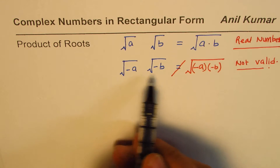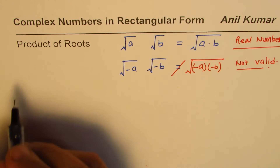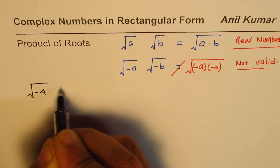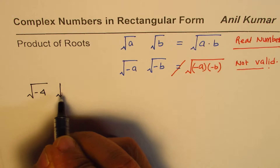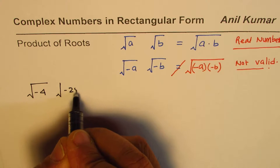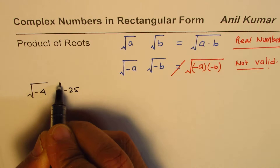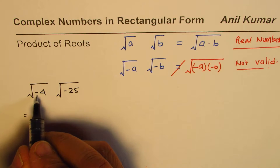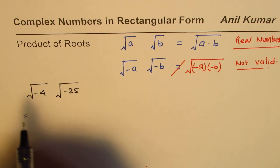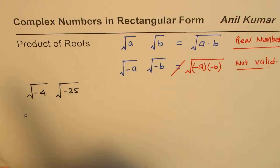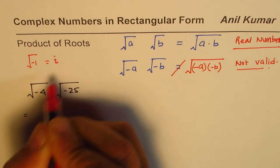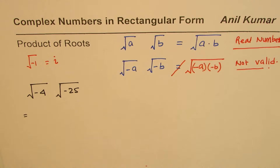So how do we solve equations which involve negatives within the square root? Let's take a few examples and work them out. For example, let's take square root of minus 4 times square root of minus 25. Now, we know that square root of minus 1 equals i, and that helps us solve these equations.